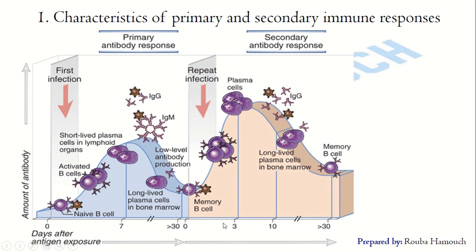This graph also shows the characteristics of primary and secondary responses concerning the humoral response. Following the first infection with the antigen, naive B cells activate and differentiate into plasma cells. The plasma cells secrete antibodies that neutralize the pathogen or the antigen. Then the level of antibodies decreases and we have a low level of antibodies.